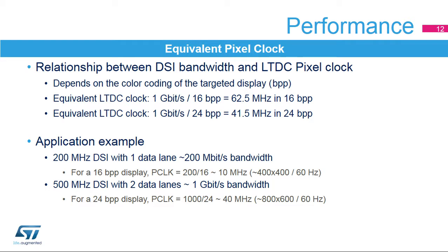In terms of performance, there is a relationship between the equivalent pixel clock and the DSI Host configuration. Depending on the color coding, the number of data lanes used, and the speed of the data lanes, we can evaluate the equivalent pixel clock. For example, when using two lanes at 500 megabits per second for a total of 1 gigabit per second, the maximum equivalent pixel clock is 62.5 MHz for 16-bit per pixel coding and 41.5 MHz for 24-bit per pixel coding. Application examples include a small 400x400 pixel display running on a single 200 megabit per second lane at 16 bits per pixel, or a large 800x600 pixel display at 24 bits per pixel running on both data lanes at 500 megabits per second each.